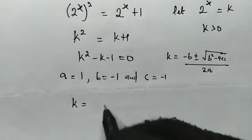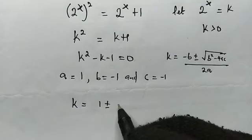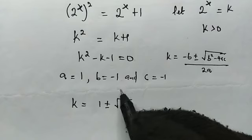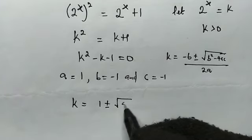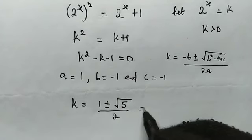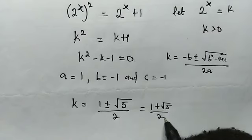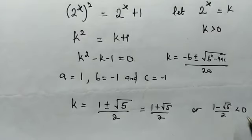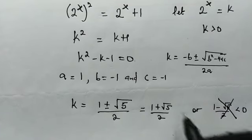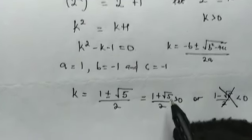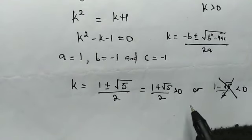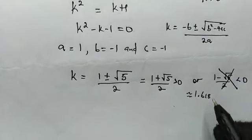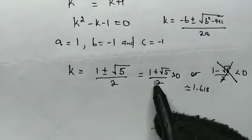And solving for k we'll get 1 plus or minus square root of, (-1)^2 is 1, minus 4ac gives us plus 4, so we'll have √5 here, divided by 2. So this is equal to (1 + √5)/2 or (1 - √5)/2. This is obviously less than 0, therefore we don't need this. Remember k must be greater than 0, and obviously (1 + √5)/2, the golden ratio, is greater than 0, approximately equal to 1.618.